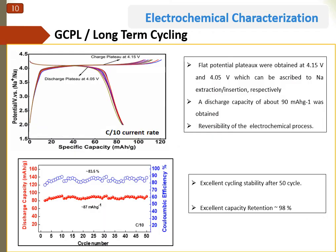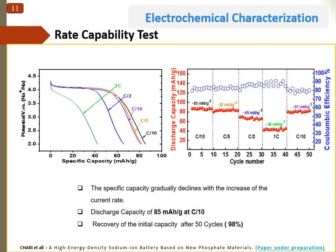Concerning GCPL long-term cycling, the cathode materials deliver an initial discharge capacity of about 90 mAh/g at C/10, and a reversible discharge capacity of about 86 mAh/g can be maintained after 50 cycles, when the electrode is cycled between 2V and 4.4V at a current rate of C/10, with an average Coulombic efficiency of 83.5%. Our last test is the rate capability test. We note a decrease of the capacity with increasing rate; however, we have a good capacity at 1C equal to about 40 mAh/g, and we also obtained good capacity retention when we return back to C/10.